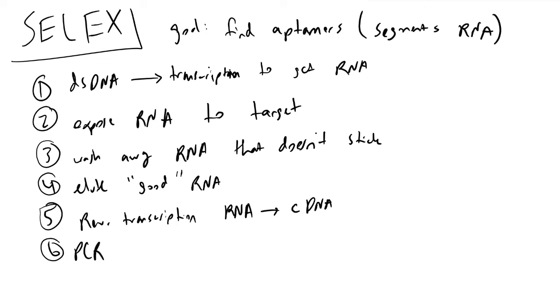We perform PCR on that DNA to obtain more of the good nucleic acid sequences—the aptamers that have high affinity for our targets. Then step seven is you just repeat the process.